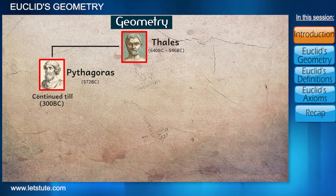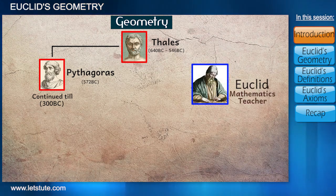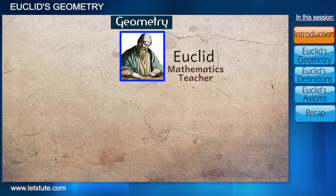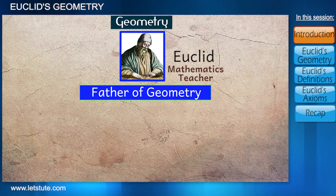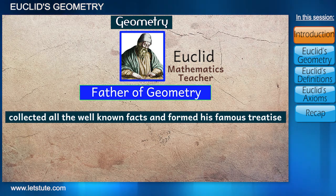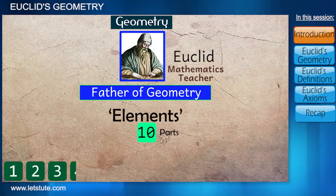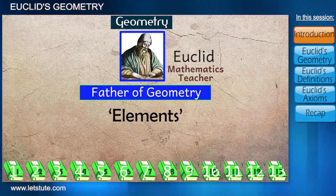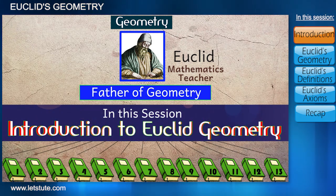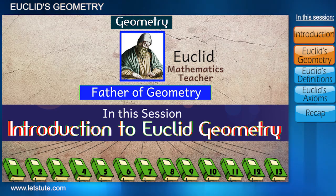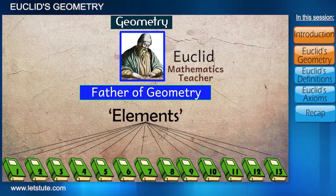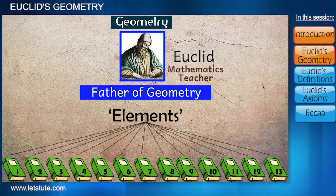At around 300 BC, Euclid, a mathematics teacher in Egypt, was also working on geometry. Today we call Euclid the father of geometry. He collected all the well-known facts and formed his famous treatise named Elements. Elements was divided into 13 parts and each part is called a book. All of his books have a great impact on today's world of geometry. In this session, we will learn what Euclid did to change the world of geometry. So let's learn Euclid's approach towards geometry and connect it with what we learn today.